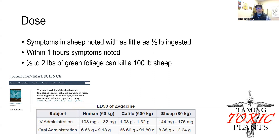With this being an acute problem, it doesn't take a whole lot of plant material to cause problems. In sheep, it's been noted that it only takes about a half a pound of death camas plant material, and symptoms can manifest within one hour of ingestion. In terms of mortality, a hundred-pound sheep could be killed by as little as a half a pound to two pounds of death camas plant material. The table at the bottom shows the LD50, or lethal dose at which 50% of a population would be killed, of the principal toxin zygosine — we're talking milligrams per kilogram for humans and sheep, and only grams of material for 600-kilogram body mass cattle.